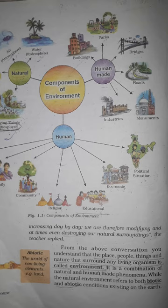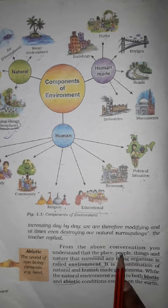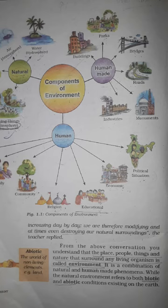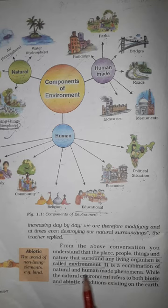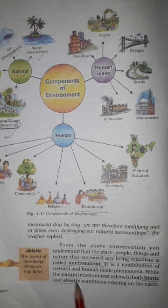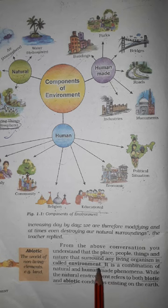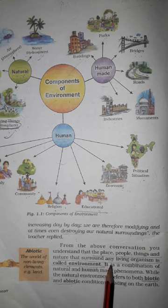From the above conversation, you understand that the place, people, things and nature that surround any living organism is called environment. So what we have seen in our conversations — we have explained that the place, people, things and nature is called environment.